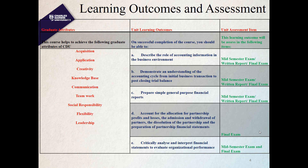For ACT 102 specifically, we have five learning outcomes. First, students describe the role of accounting information in the business environment. Second, they demonstrate an understanding of the accounting cycle from initial business transactions to post-closing trial balance. Third, students prepare basic financial reports so they can read and understand them. Fourth, they understand partnership financial statements — how to form a partnership, how partners can withdraw, and how to dissolve a partnership.